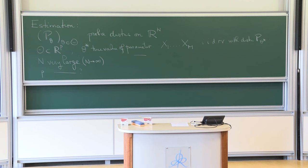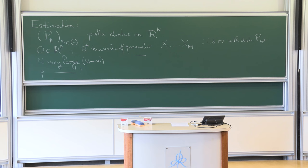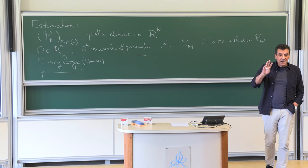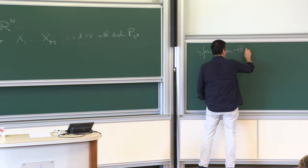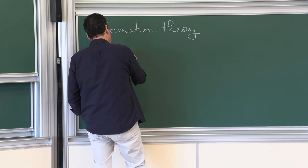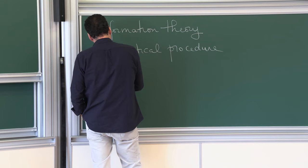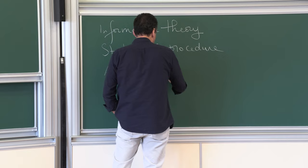Now how do you define a statistical procedure? There are in fact three steps. The first one is information theory. The second one is the statistical procedure. The third one is the algorithmic aspect. They come in that order.